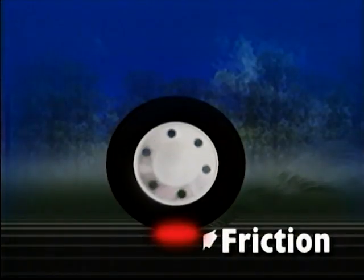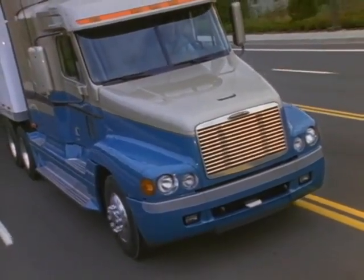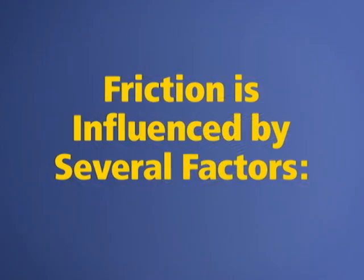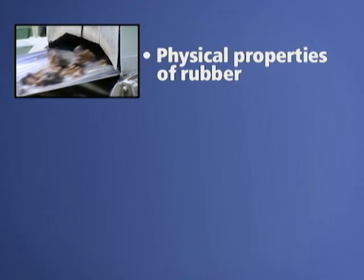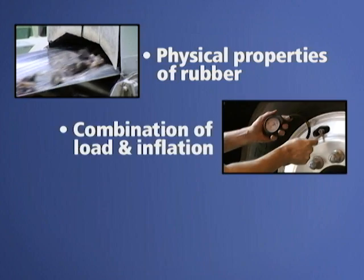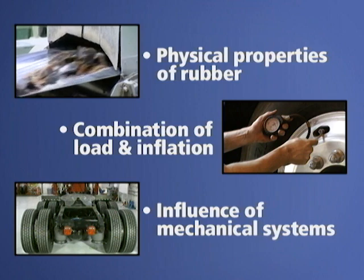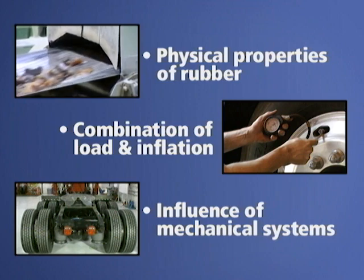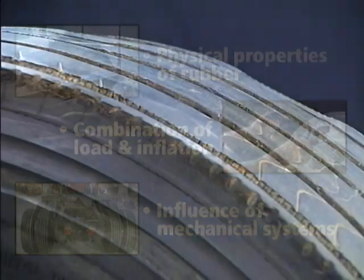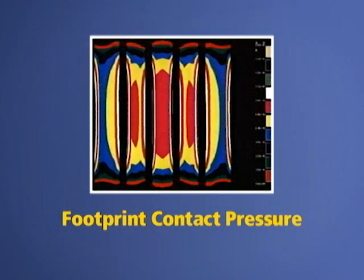Wear is the result of friction created between the surface of the road and the tread of the tire as it rolls along the highway. This friction is influenced by several factors: the physical characteristics of rubber, the resulting combination of load and inflation on the tire, and the vehicle's mechanical condition, such as alignment, as well as the road surface itself. The wear pattern you see is due in large part to the shape of the tire's footprint in contact with the road.